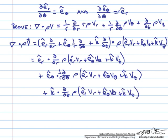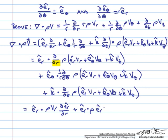Now let's go through and evaluate the partial differentials. For the first term, evaluating the partial with respect to r using the product rule: ê_r dot (ρ times ∂ê_r/∂r) plus ê_r dot (ρ times ê_r times ∂v_r/∂r). Looking at the remaining terms — ê_θ and v_θ — these are not functions of r, so their derivatives will be equal to zero.